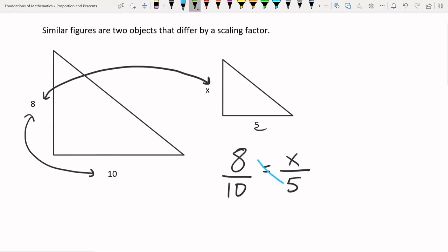8 times 5 is 40, 10 times X is 10X. We have 40 equals 10X, and then we just divide by 10. 40 divided by 10 is 4. So X equals 4.